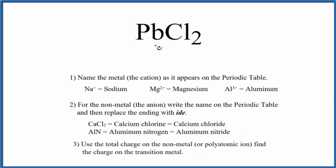First, we write the name for the metal, that's lead. Next, we write the name for the non-metal, that's chlorine, lowercase c, and then we change the I-N-E. We replace that with I-D-E.